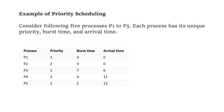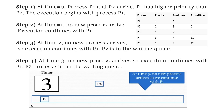The preemptive approach is explained here using the following example. We have processes P1 to P5, with priority, burst time, and arrival time given. We can start the scheduling of the process — that is, how and in which order the processes are executed. At time 0, processes P1 and P2 arrive. P1 has higher priority than P2, and a lower number indicates higher priority, so execution begins with P1.